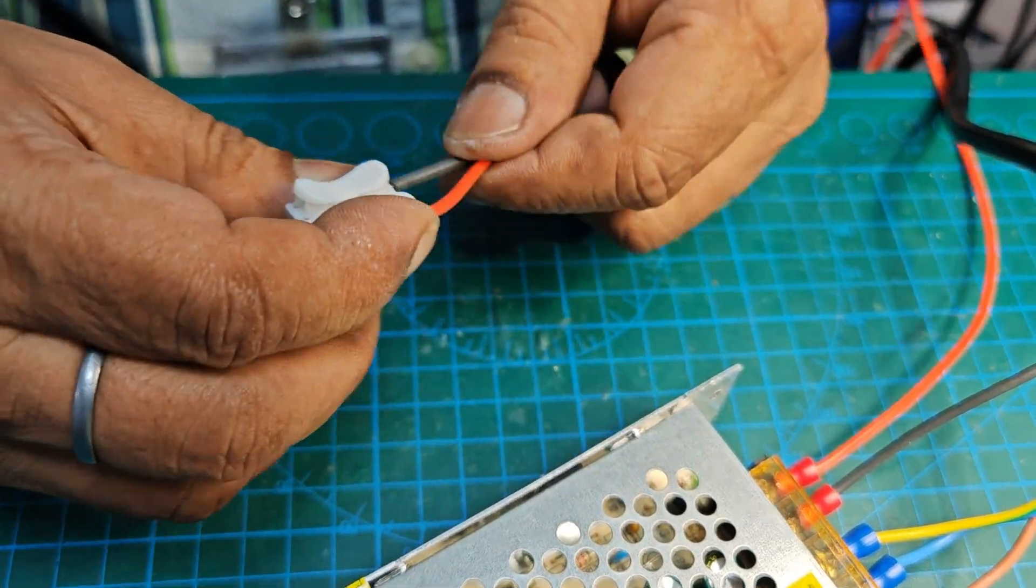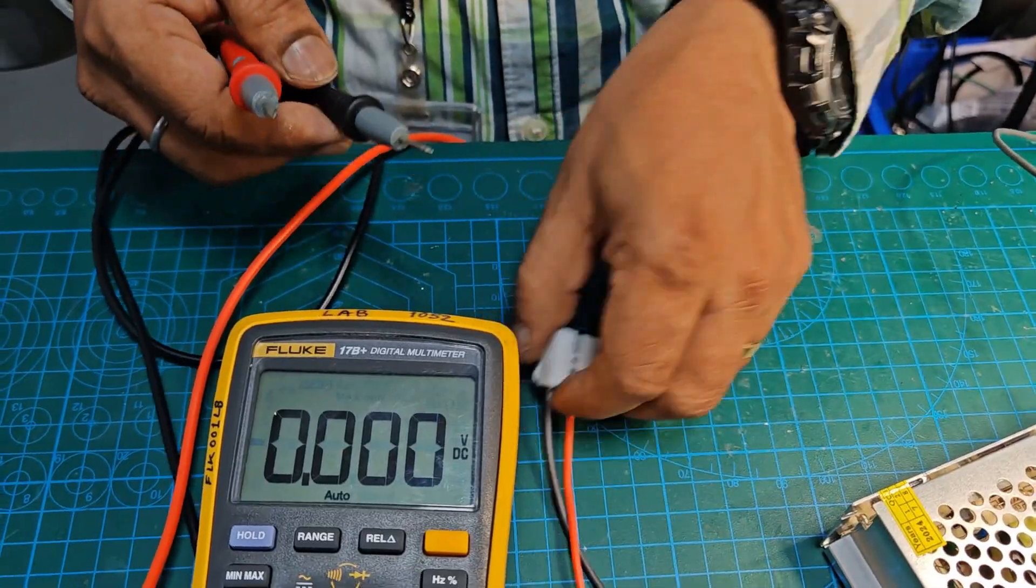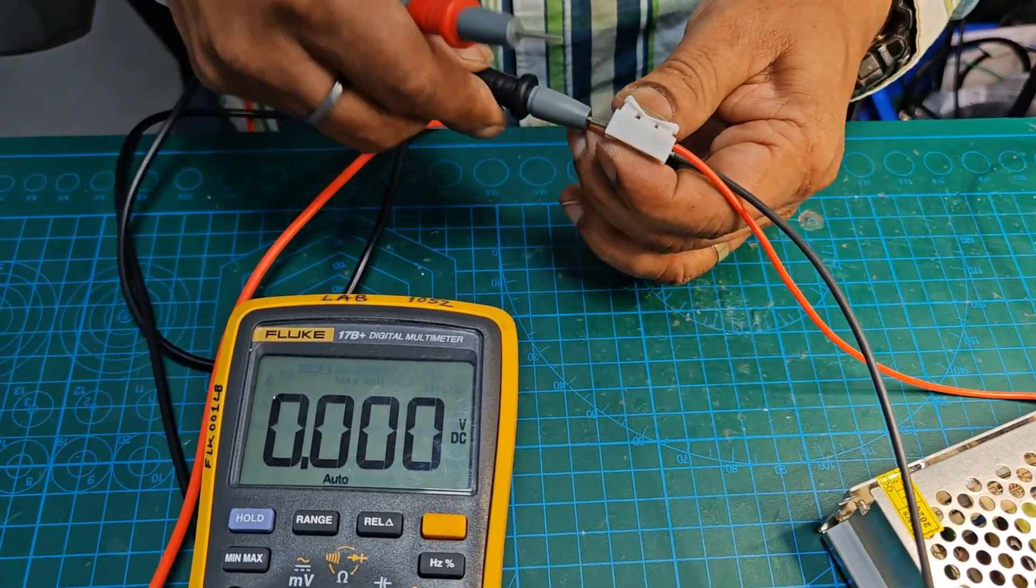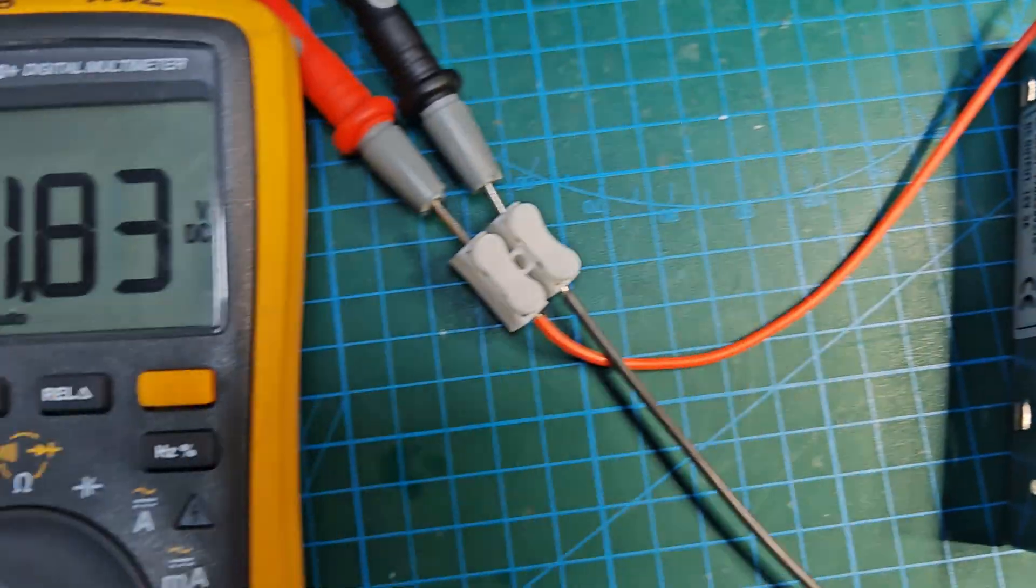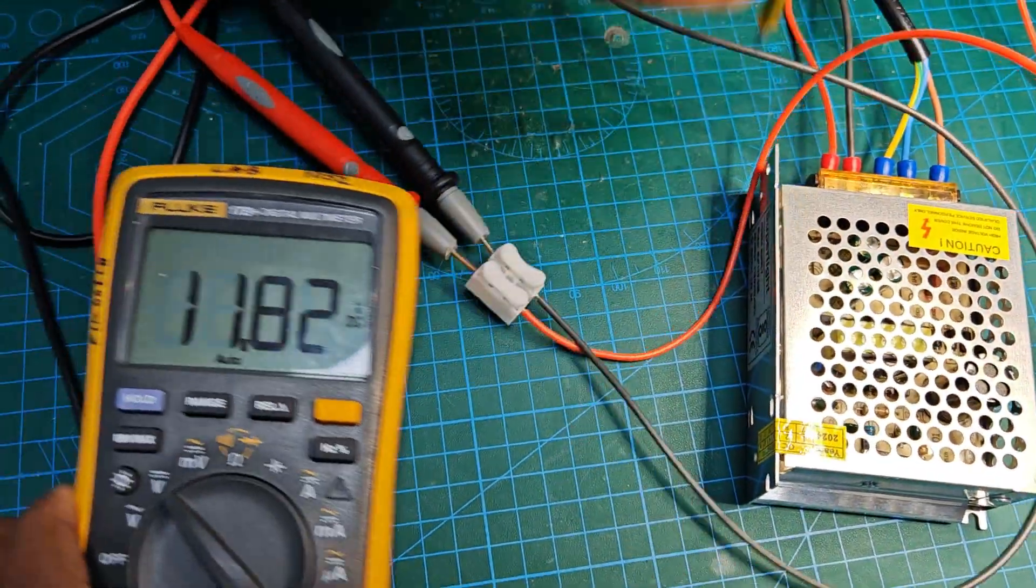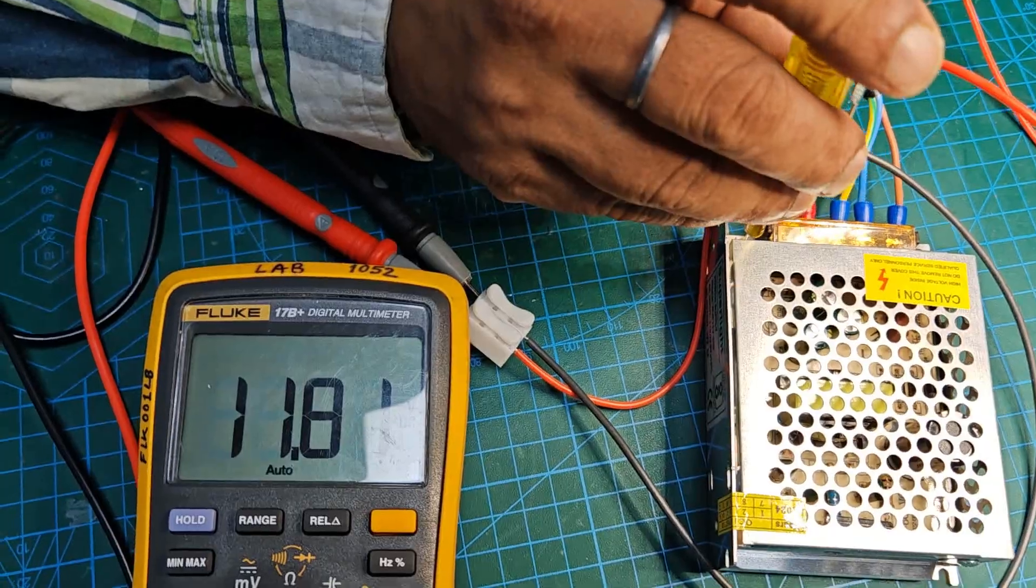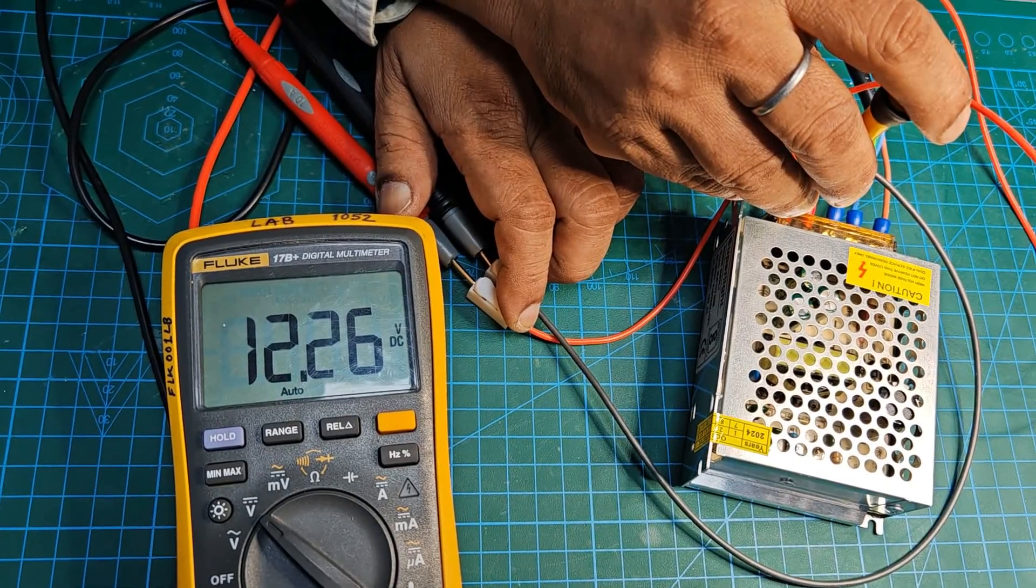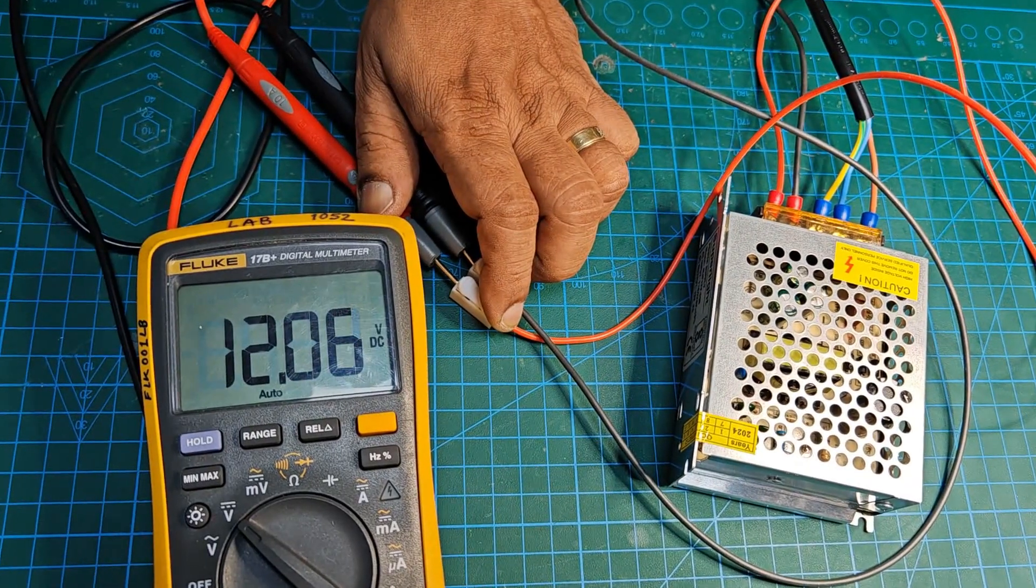Take the wire connector. On one side we are giving the output of the SMPS. Let us check the output of the SMPS. You can see the green color LED indicates the SMPS is turned on. The output of the SMPS is 11.82. Now we have to adjust the output voltage to exactly 12.5 plus minus with tolerance. You can just adjust it. You can see it is 12.04. We have adjusted the output of the SMPS.